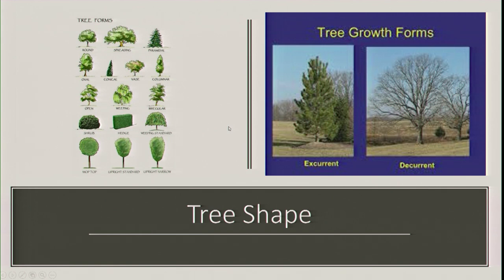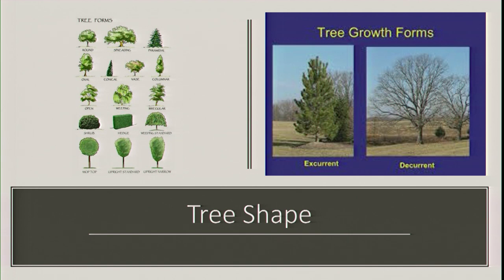Tree growth form: we have excurrent and decurrent. Excurrent is where you have a central leader with branches very evenly spaced like a staircase. Decurrent is more like an oak tree, where the structure goes kind of all over the place. Based on shape, some trees are going to have vase-shaped canopies, like American elms and redbuds. Willow trees also tend to be somewhat vase-shaped.